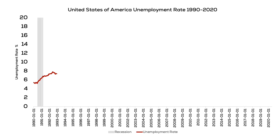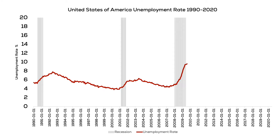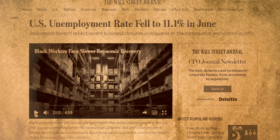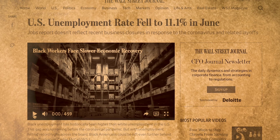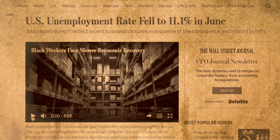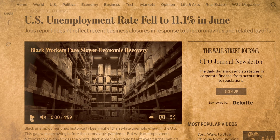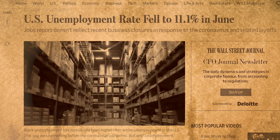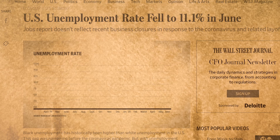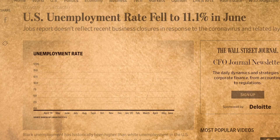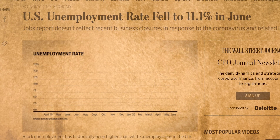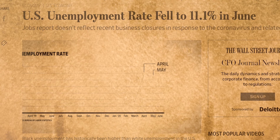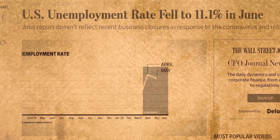A 30-year graph of the U-3 unemployment rate looks like this. The U-3 unemployment rate is the most popular measure of unemployment and it is the one that is usually referenced in the news. After two months of unprecedented increases, the U.S. unemployment rate took a surprising turn in May — it went down. This dip was a hopeful sign that the economy might be bouncing back from coronavirus lockdowns.